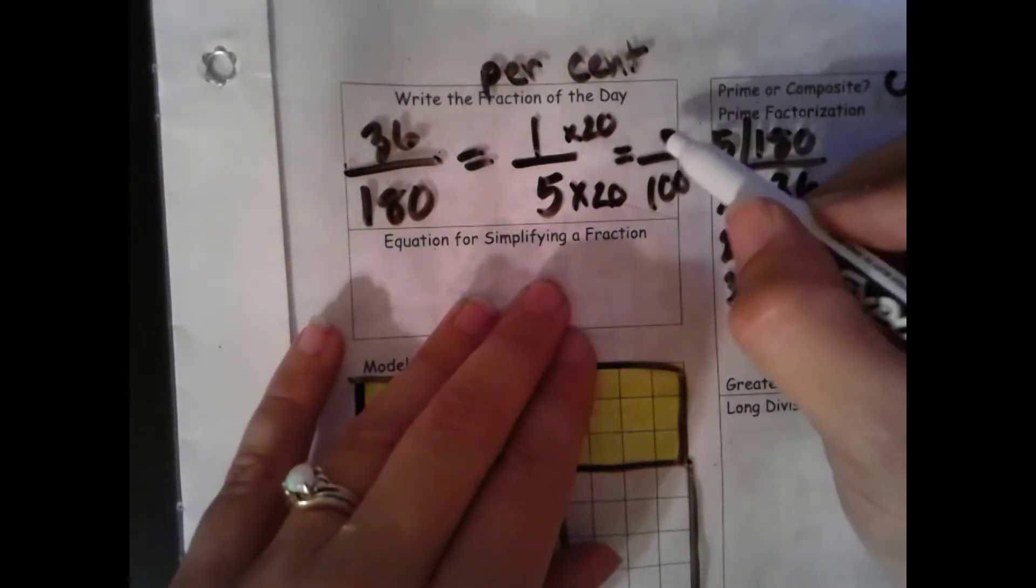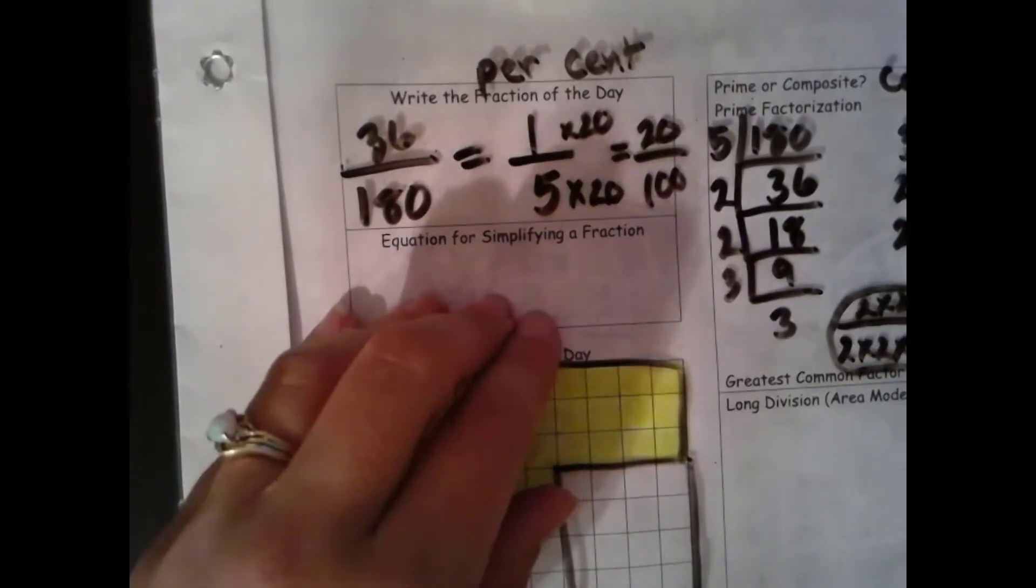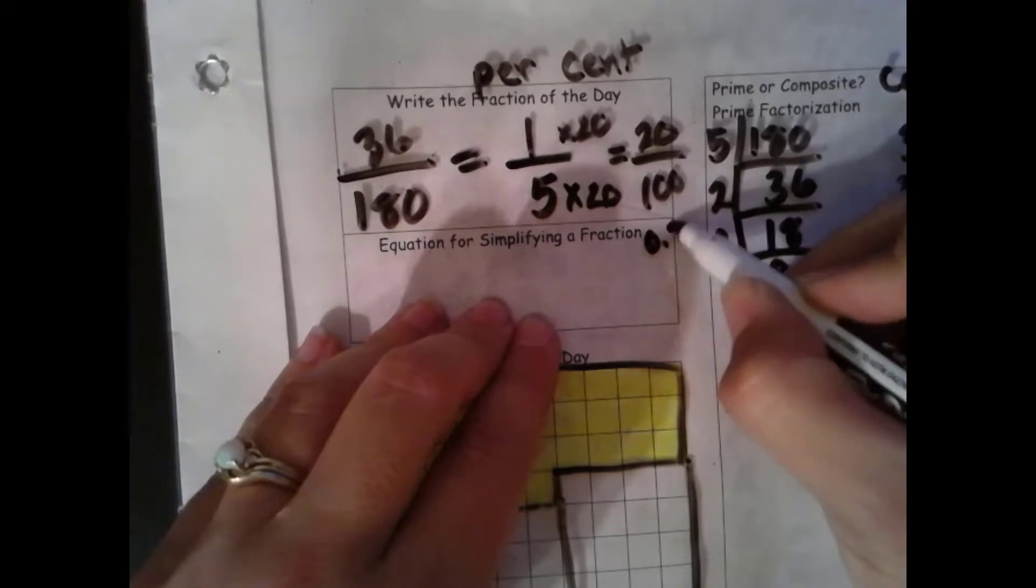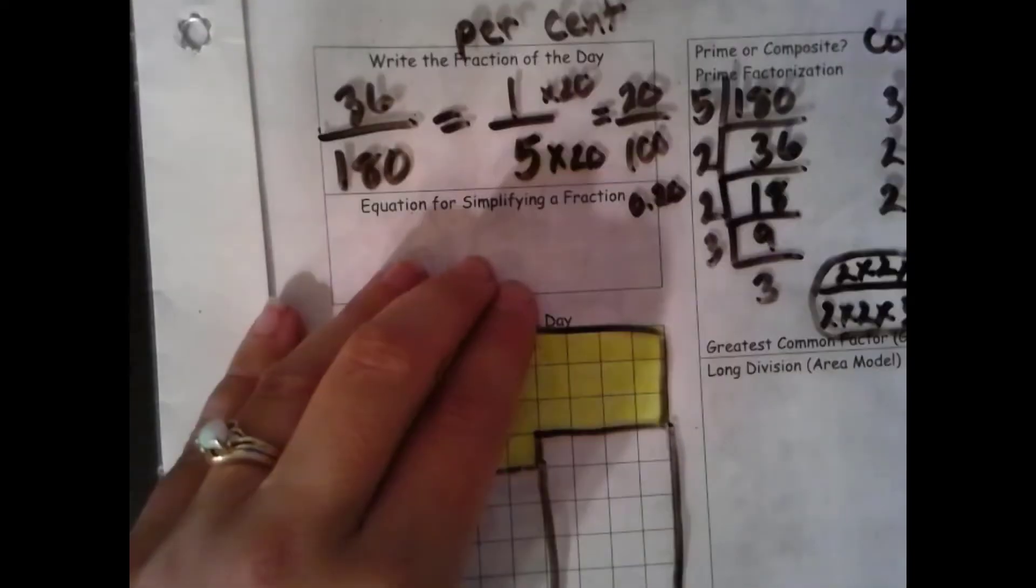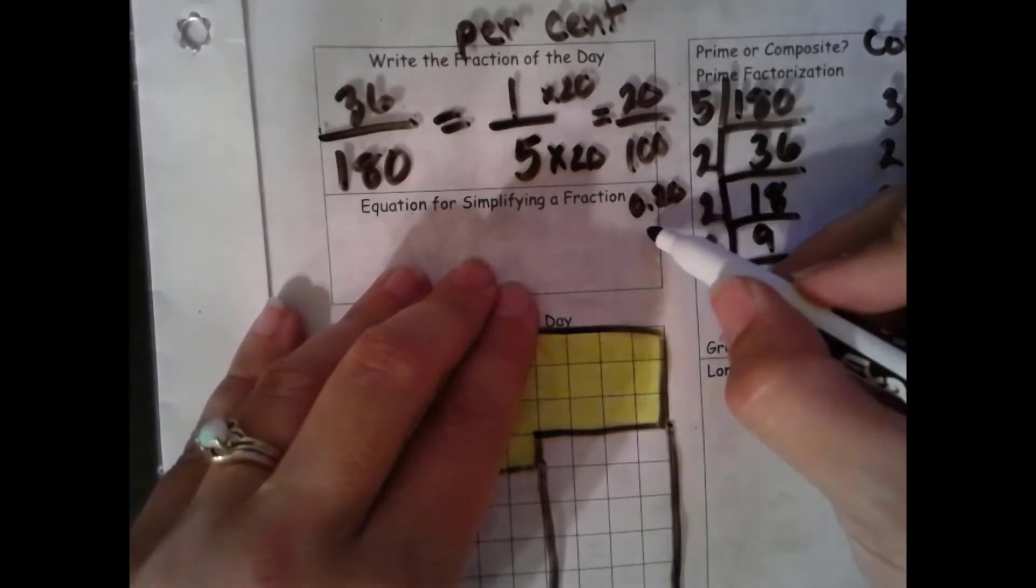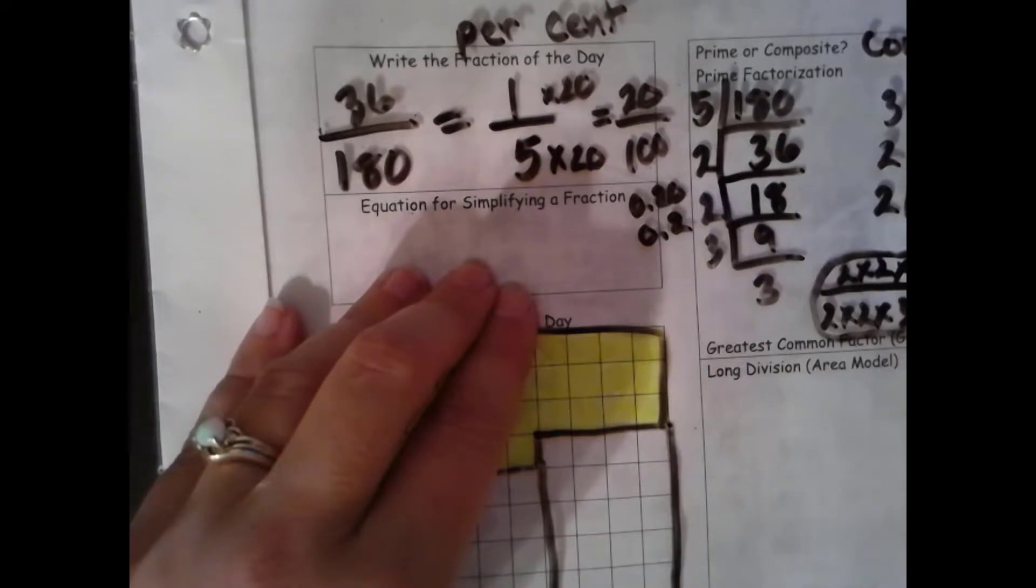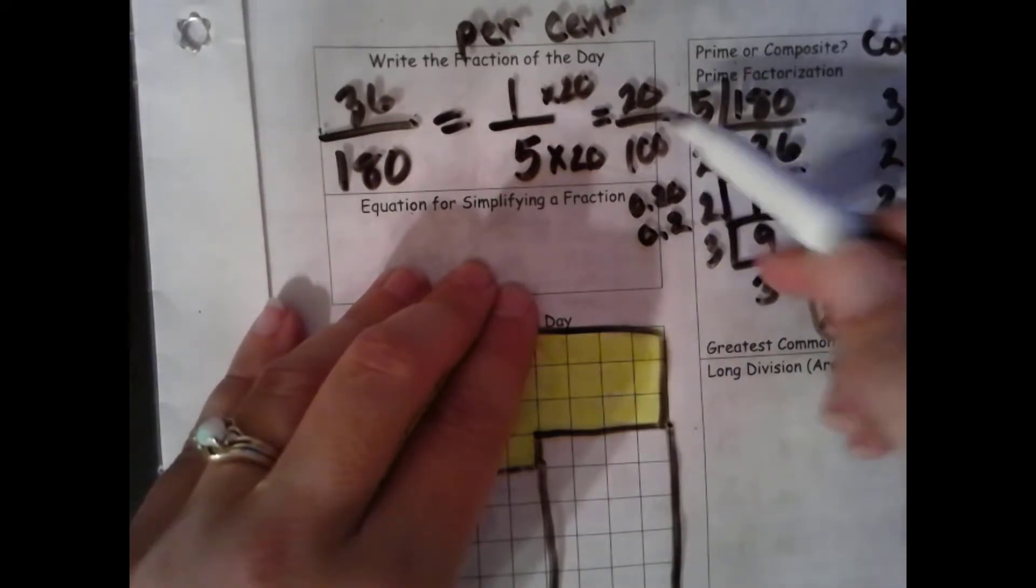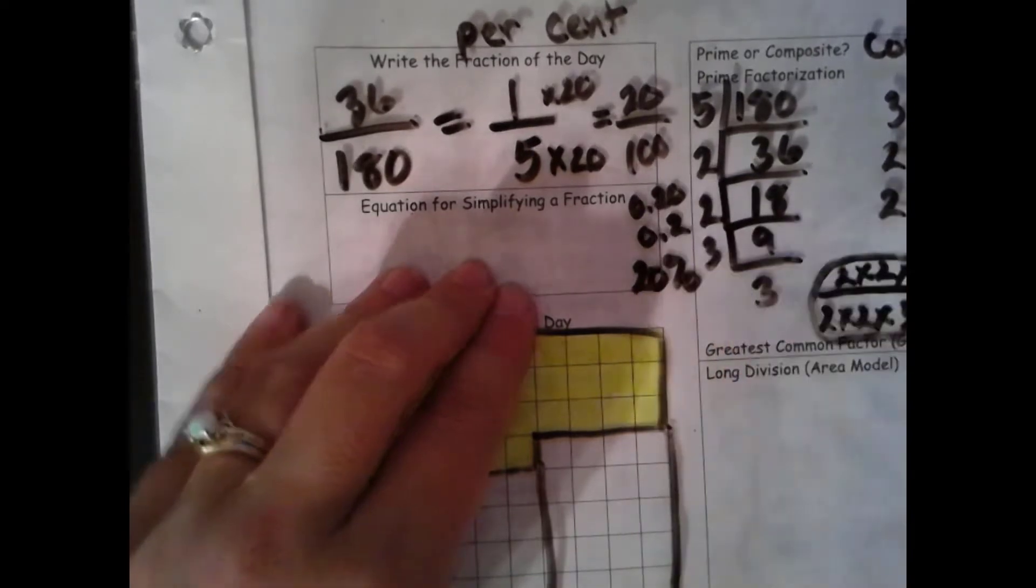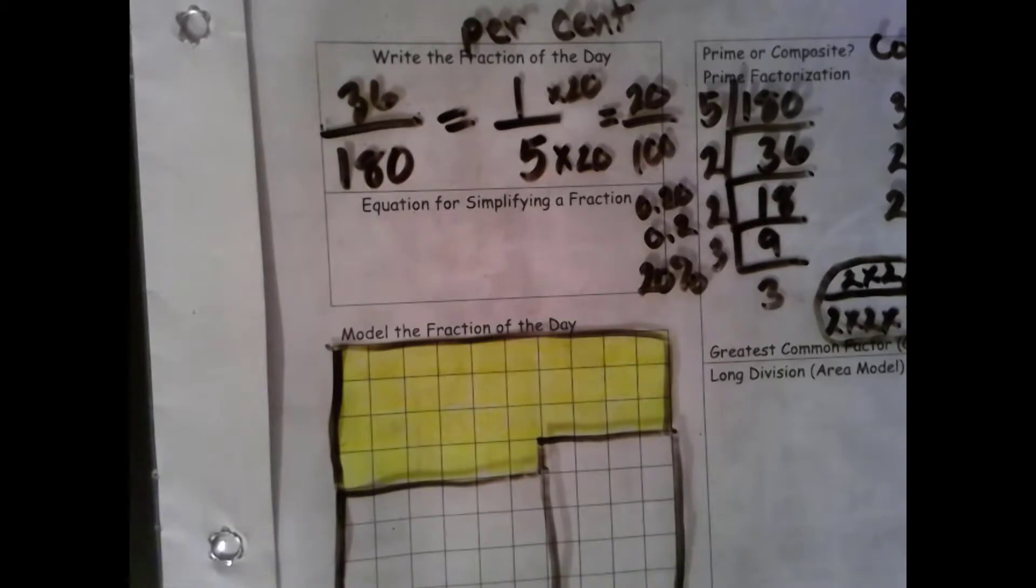Get that equivalent fraction, but with a denominator of 100. So 20 hundredths, the same as 20 cents, or 20 hundredths, or 2 tenths. Which is 20 per 100, or 20 percent. So we have completed 20 percent of the school year. We have 80 percent left.